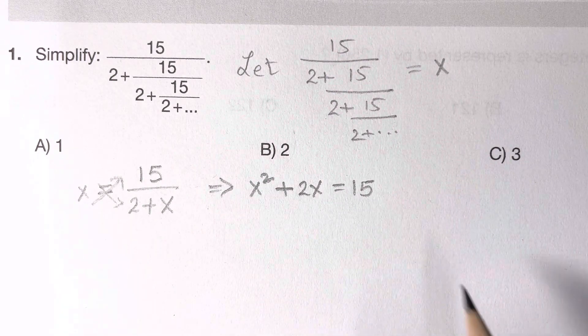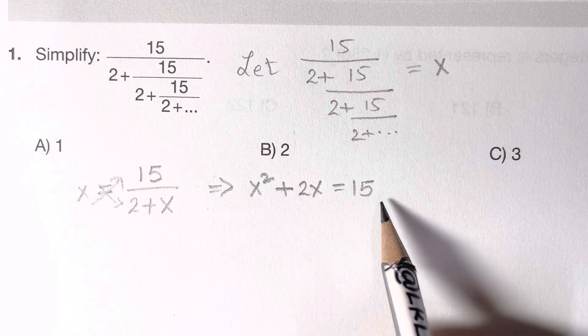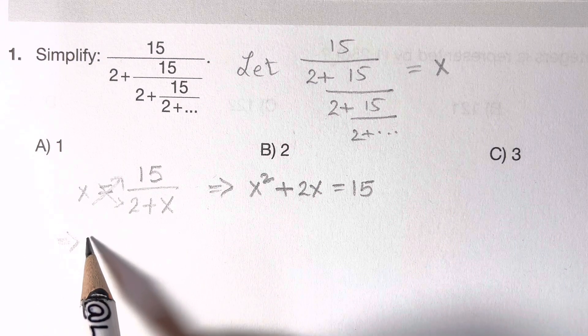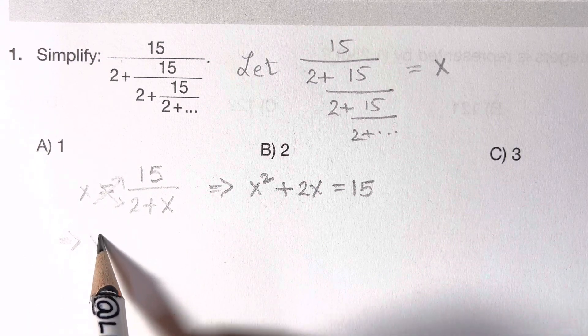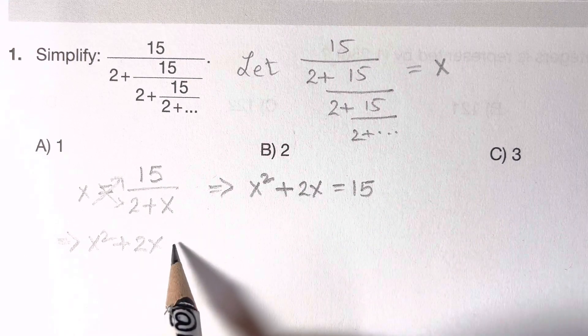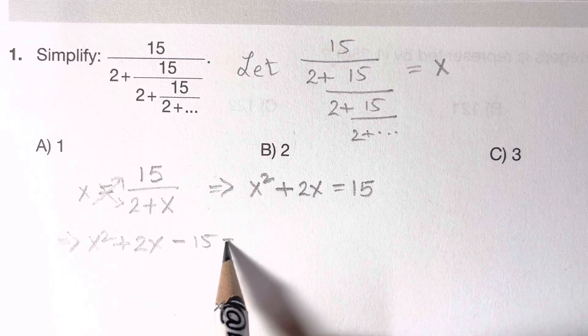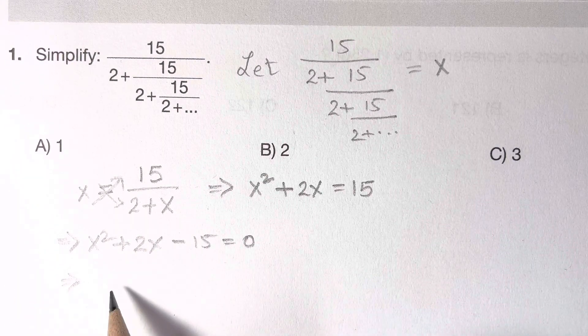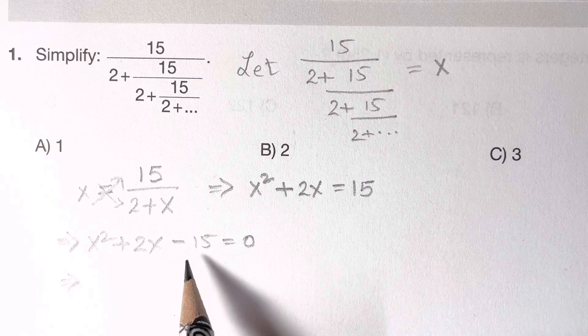Now we're going to solve this. How are we going to solve that? x squared plus 2x, bring 15 this side, so that's negative 15 equals to 0. Now we have to factorize it.